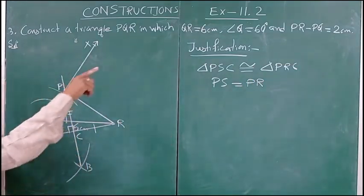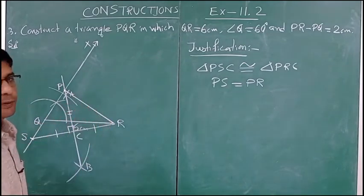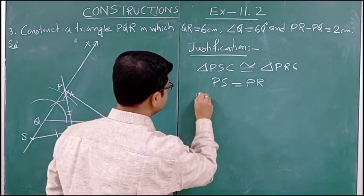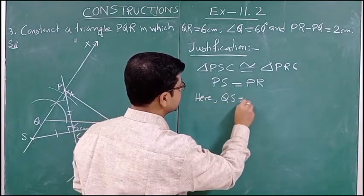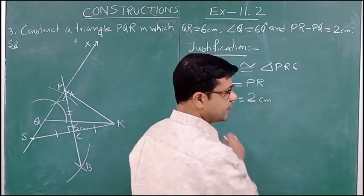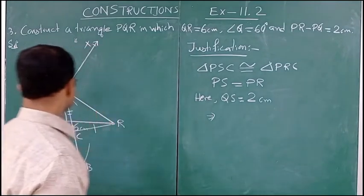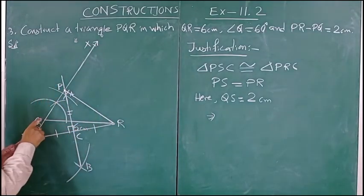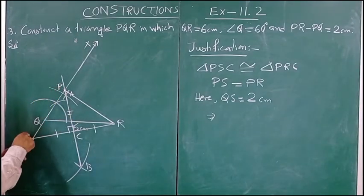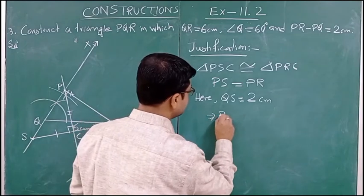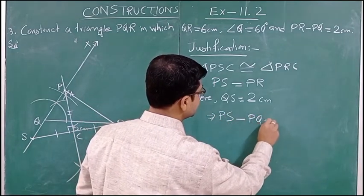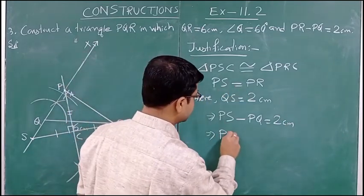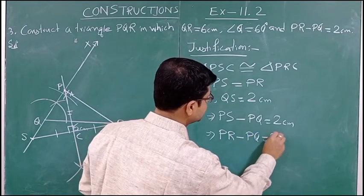As they are congruent, PS equals PR. Now, QS is 2 centimeter as we took it. In the diagram, QS equals PS minus PQ. Since PS equals PR, we get PR minus PQ equals 2 centimeter — which is what was required.